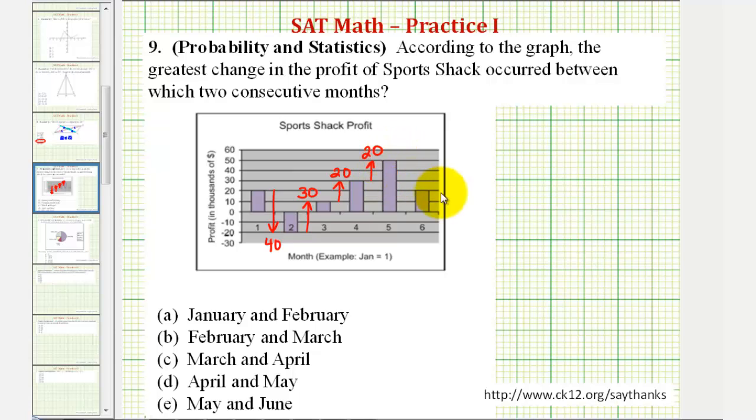Finally, from the fifth month to the sixth month, profits went from fifty thousand to twenty thousand, a decrease of thirty thousand.